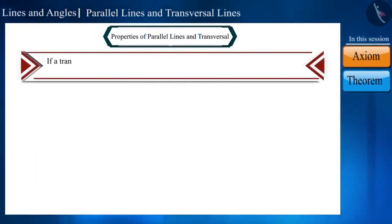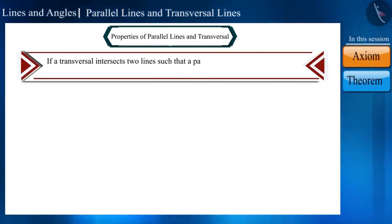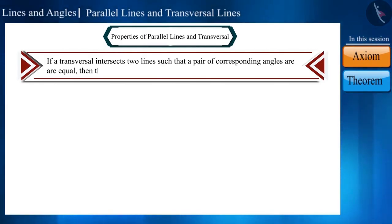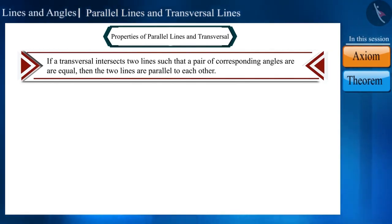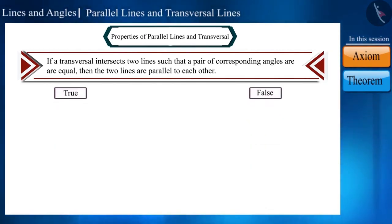If a transversal intersects two parallel lines such that a pair of corresponding angles are equal, then the two lines are parallel to each other. Friends, is this statement true? Let us check this statement.